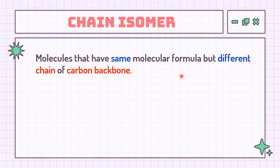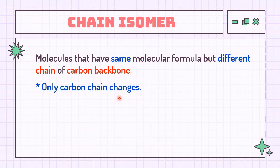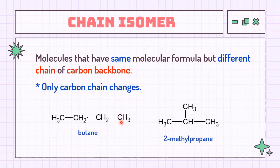Chain isomers arise because of the possibility of branching in carbon chains. For example, there are two isomers of butane, C4H10. In one of them, butane, the carbon atoms lie in a straight chain, whereas in 2-methylpropane, the chain is branched.